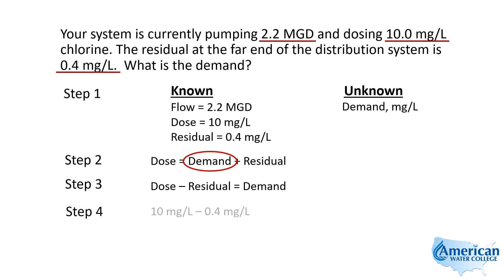Once it's rearranged, we can plug in our numbers. Our dose is 10 milligrams per liter, and our residual is 0.4 milligrams per liter. The difference between 10 and 0.4 will be our demand, which is 9.6 milligrams per liter.